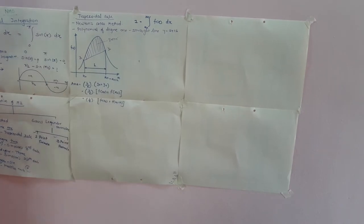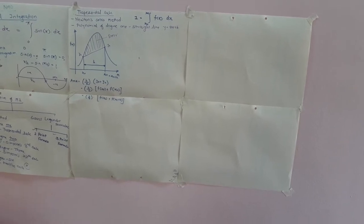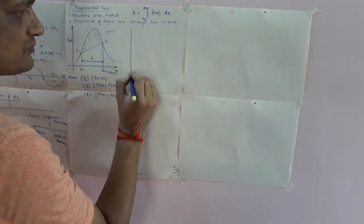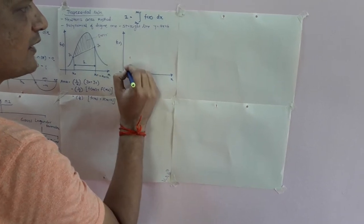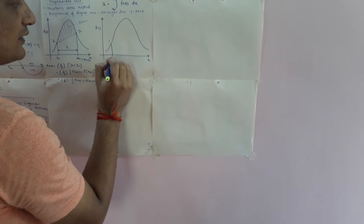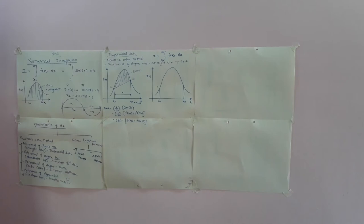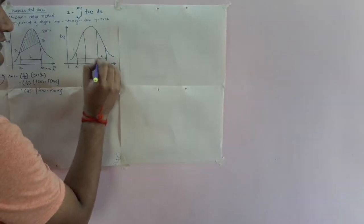Observing the pink shaded area, the error is quite large. To reduce that error, we can use more number of strips. Now suppose we use three different strips on the same curve of x versus f(x) with the same limits x0 to xn. Each strip has the same height h.